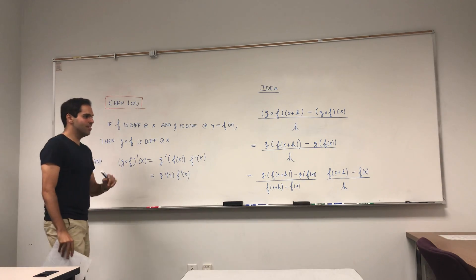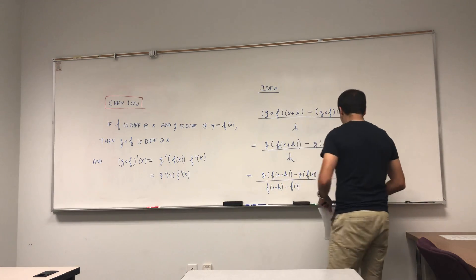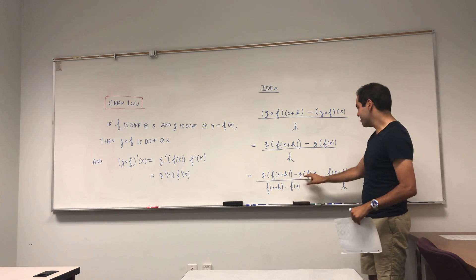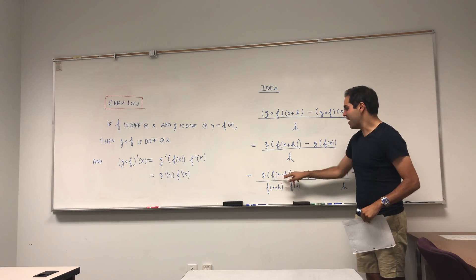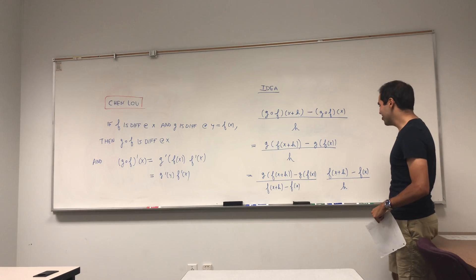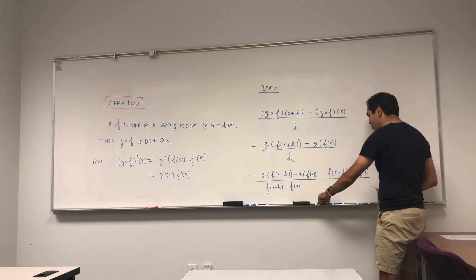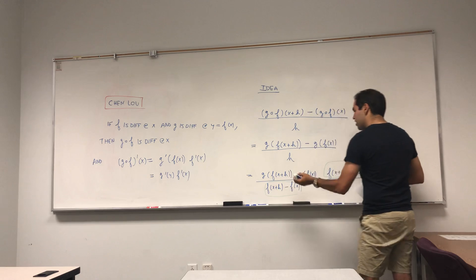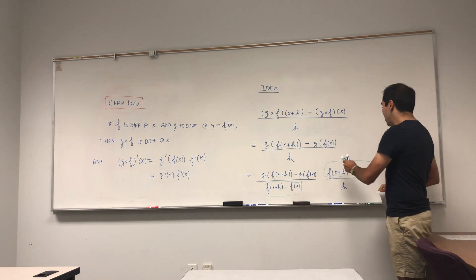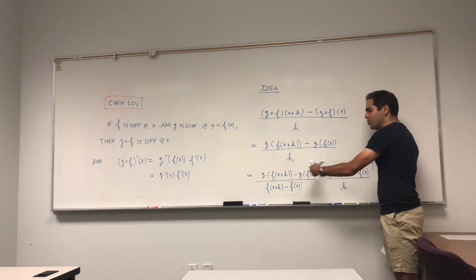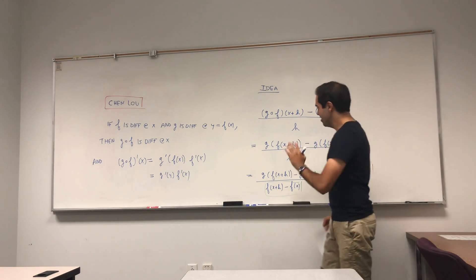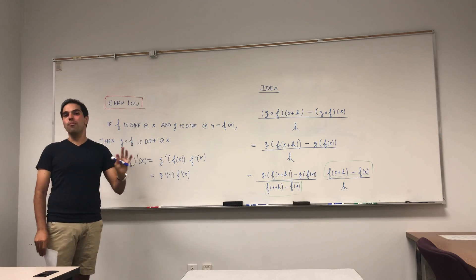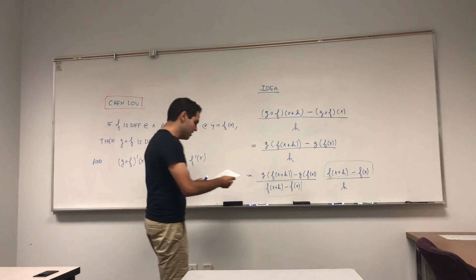This is neat because if you take the limit as h goes to zero, this would give you f prime, and this would sort of give you g prime of f of x — not quite, because we have f of x plus h. But that's not really the main problem. The main problem is that f of x plus h minus f of x could actually equal zero, and we can't do zero over zero. So that was a good try, but we have to tweak this idea a little bit.